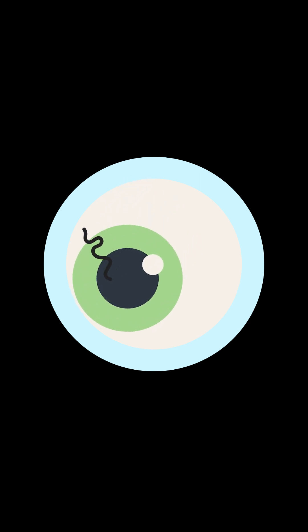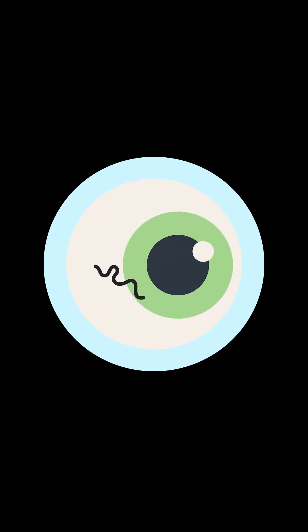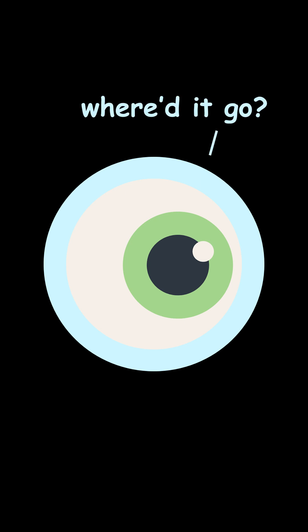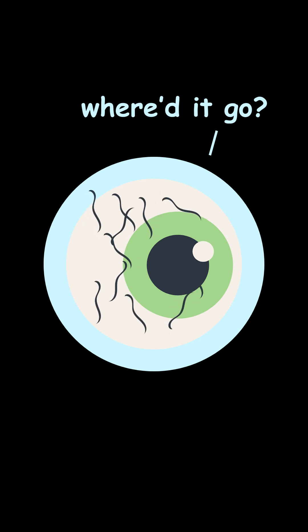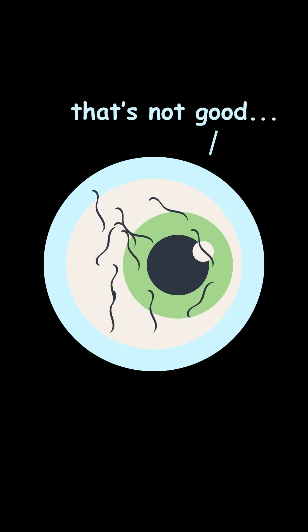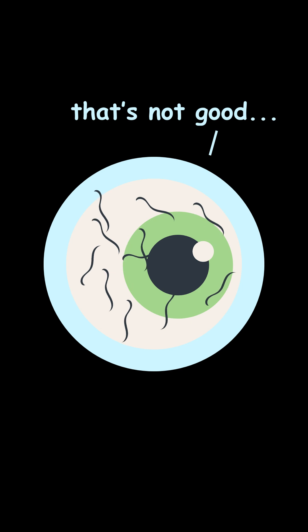If you try to move your eye to focus on the string, the gel around your eye also moves and takes the string with it, and that's why it's really hard to get a good look at an eye floater. Almost all of us will gradually see more of these things as we get older, but if you notice a whole bunch of them all appearing at once, you should probably see an eye doctor right away.